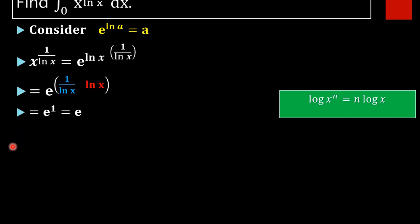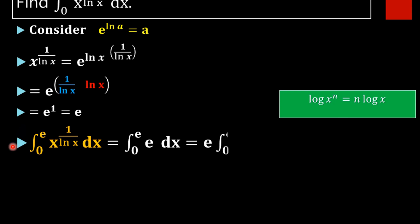Next, we integrate: the integral from 0 to e of x raised to 1 by ln x dx equals the integral from 0 to e of e dx. Since e is a constant, we take it outside, leaving e times the integral from 0 to e of 1 dx.